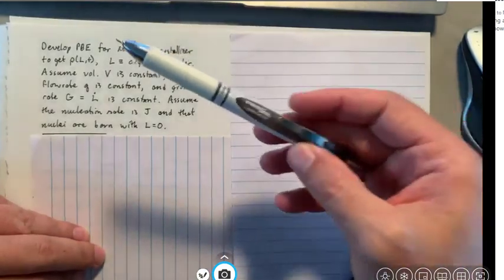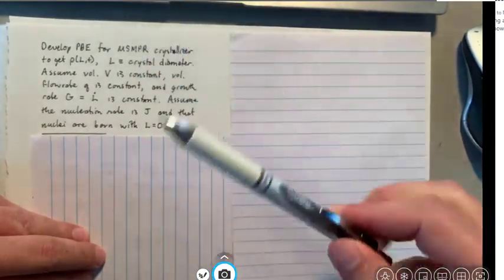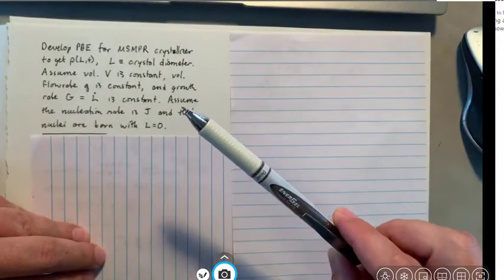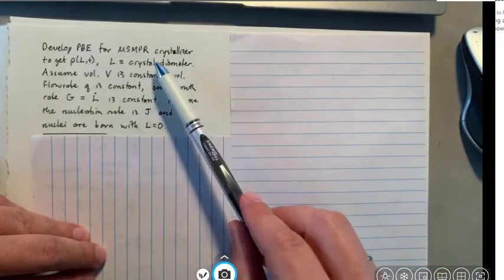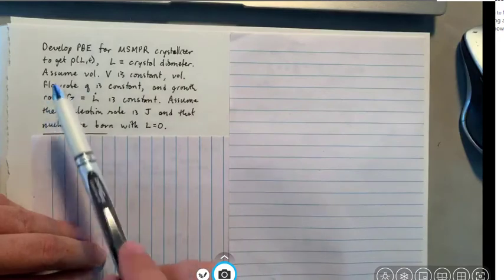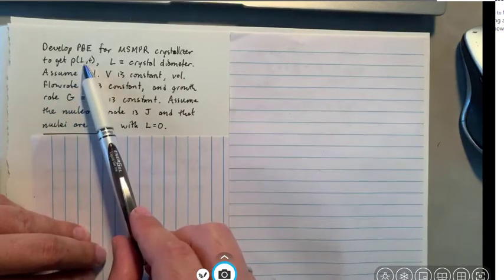In this recording we're going to do an example where we develop a population balance equation for an MSMPR crystallizer to get the distribution of crystals with diameter L at time T.